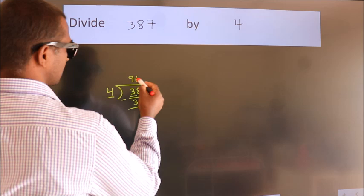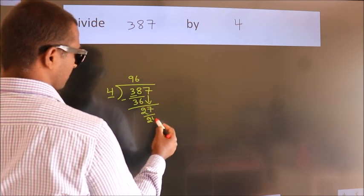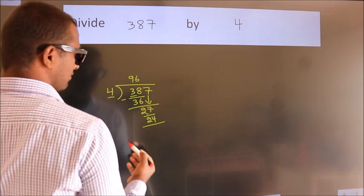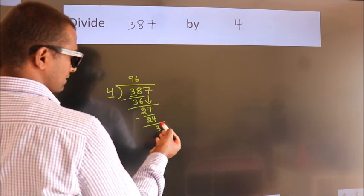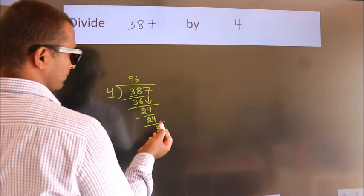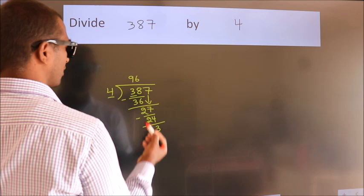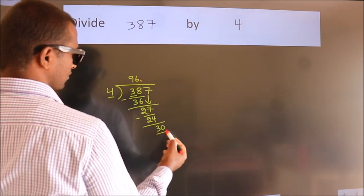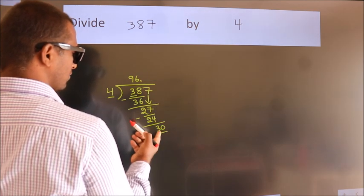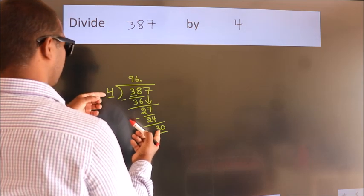Now we subtract, we get 3. After this no more numbers to bring down, so what we do is we put a dot, take 0, so 30. A number close to 30 in the fourth table is 4 times 7, 28.